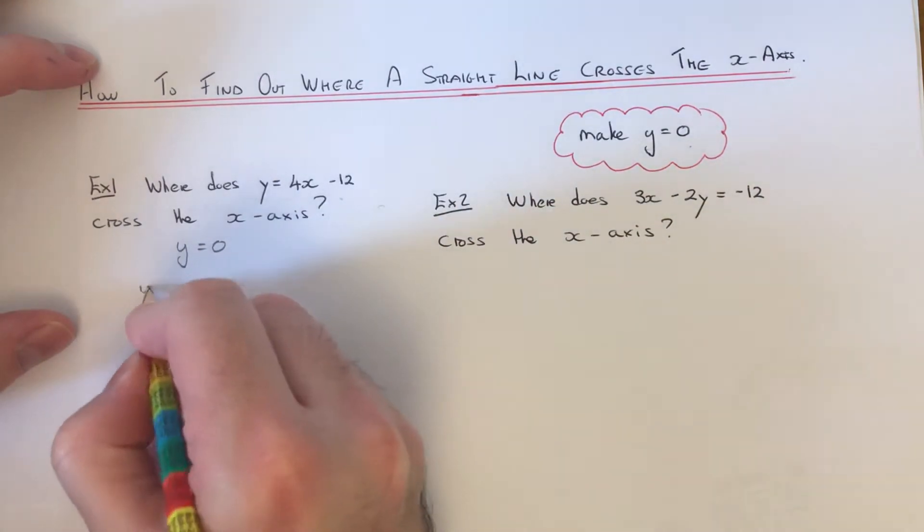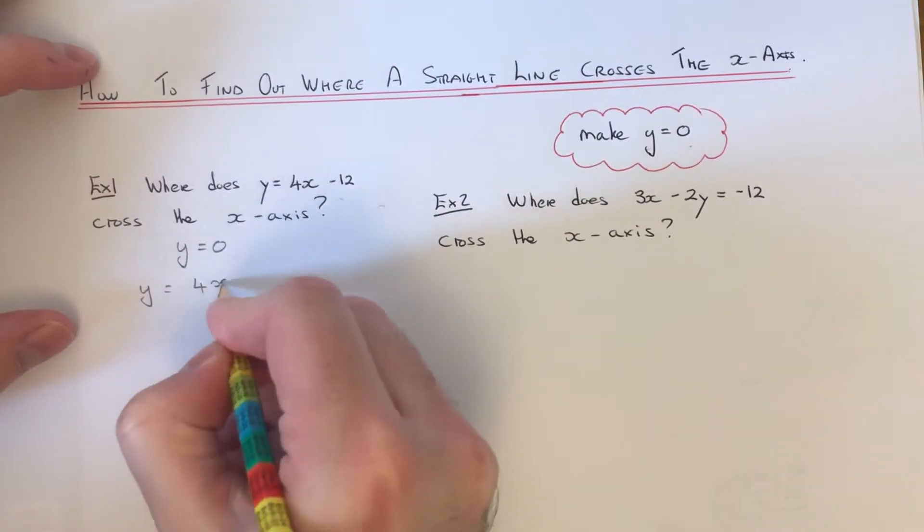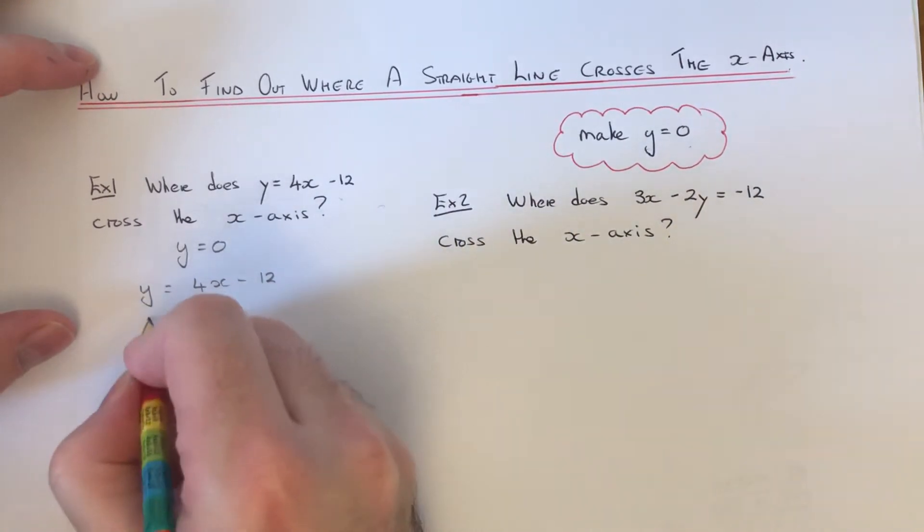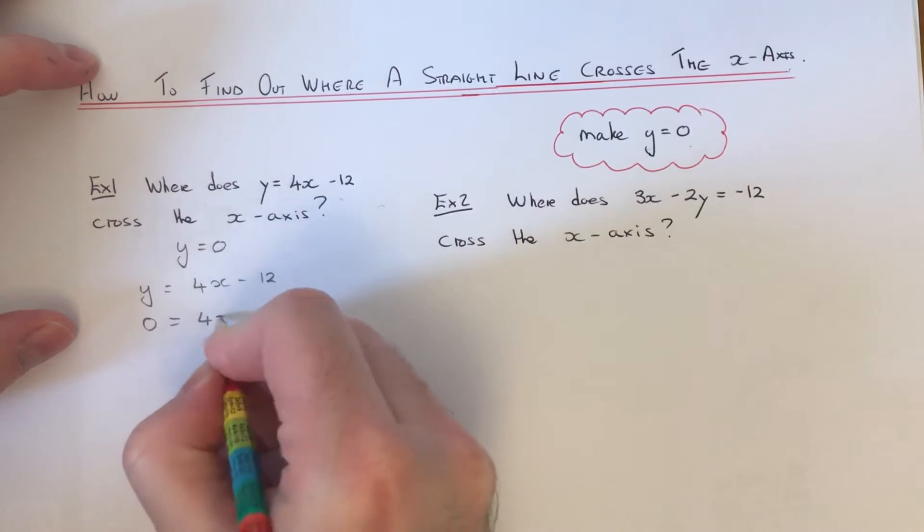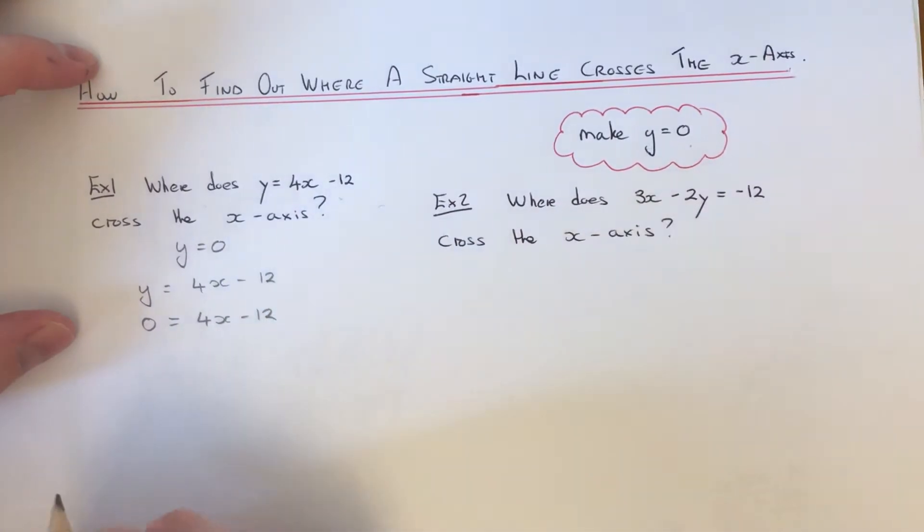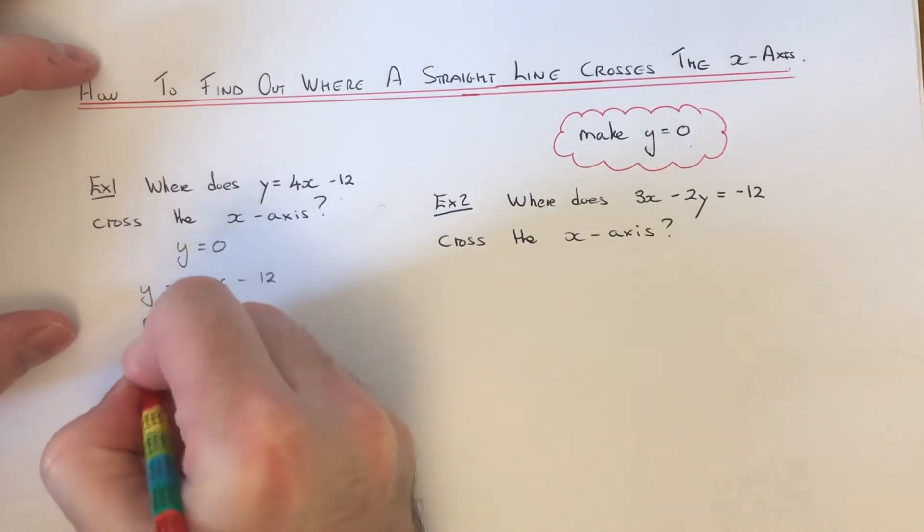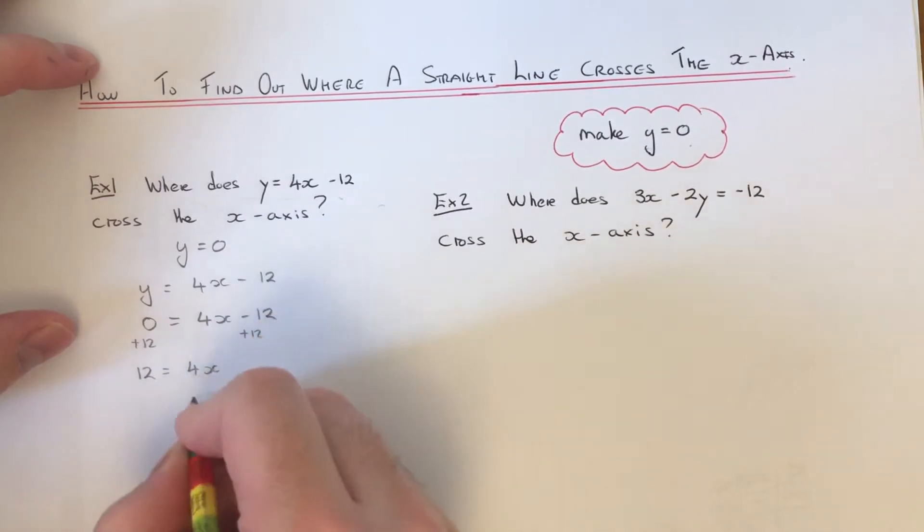Our equation was y equals 4x minus 12. If we change the y to 0, then we just need to solve that equation. Add 12 to both sides, and then divide by 4 on both sides.